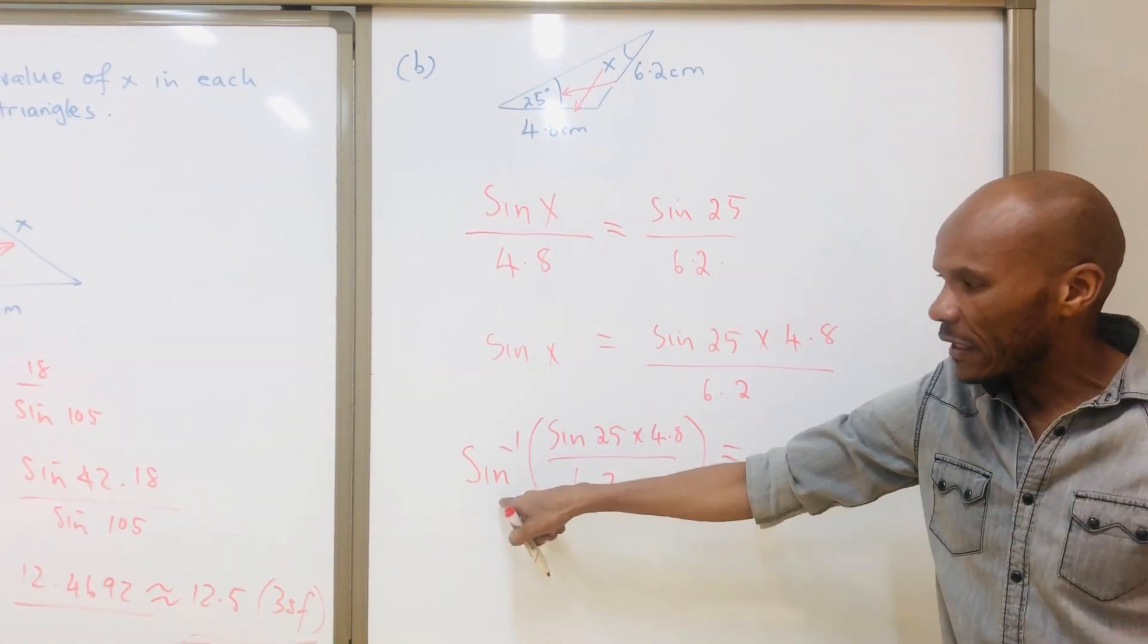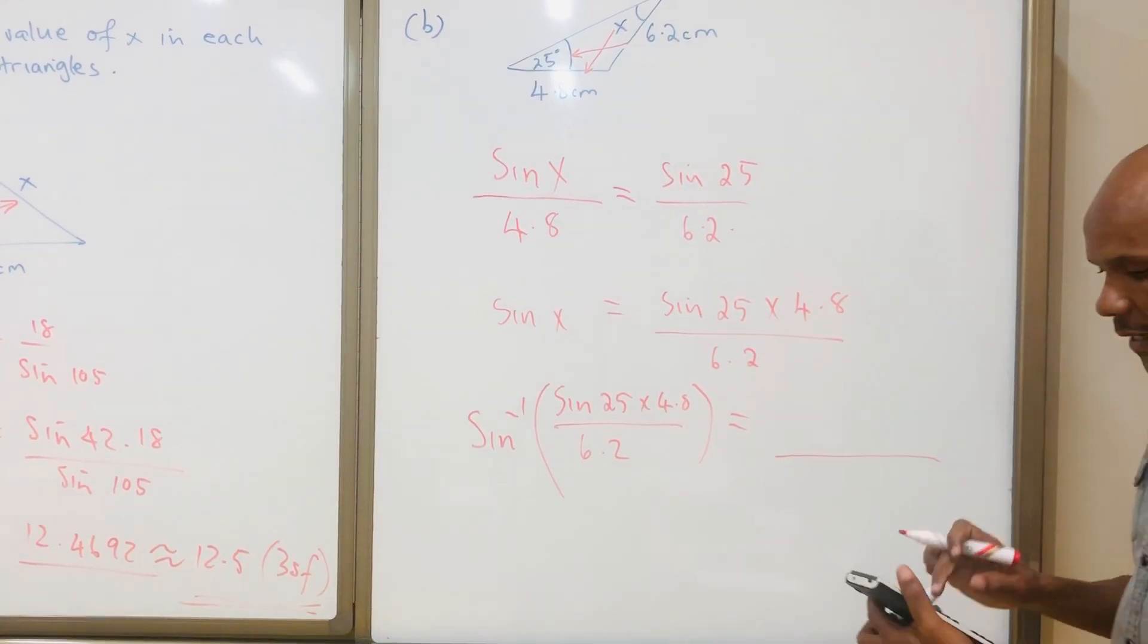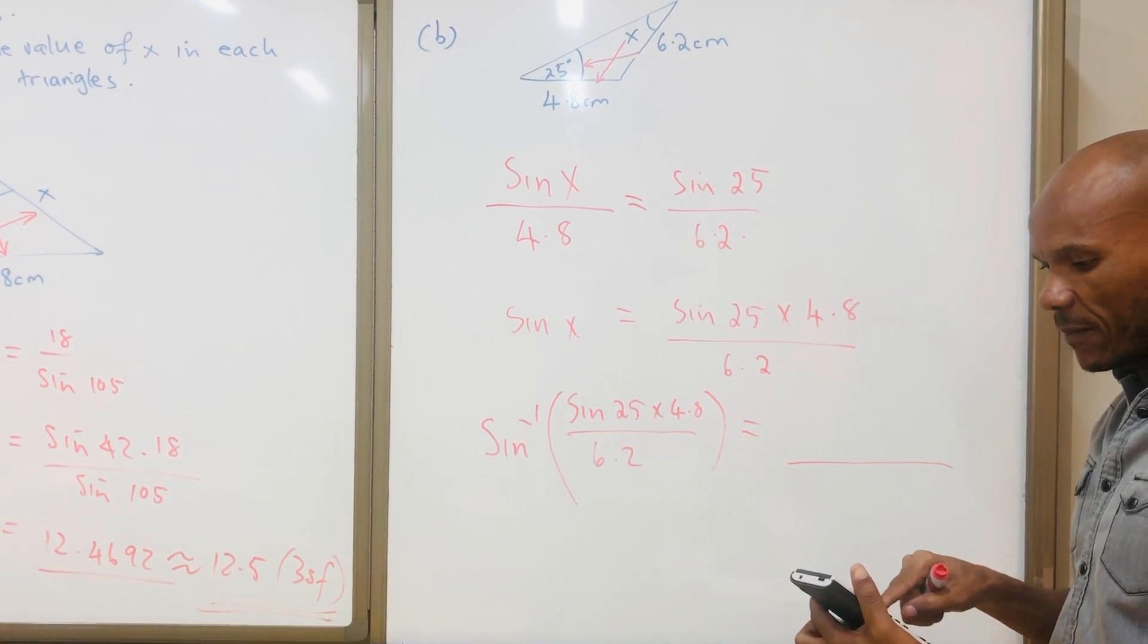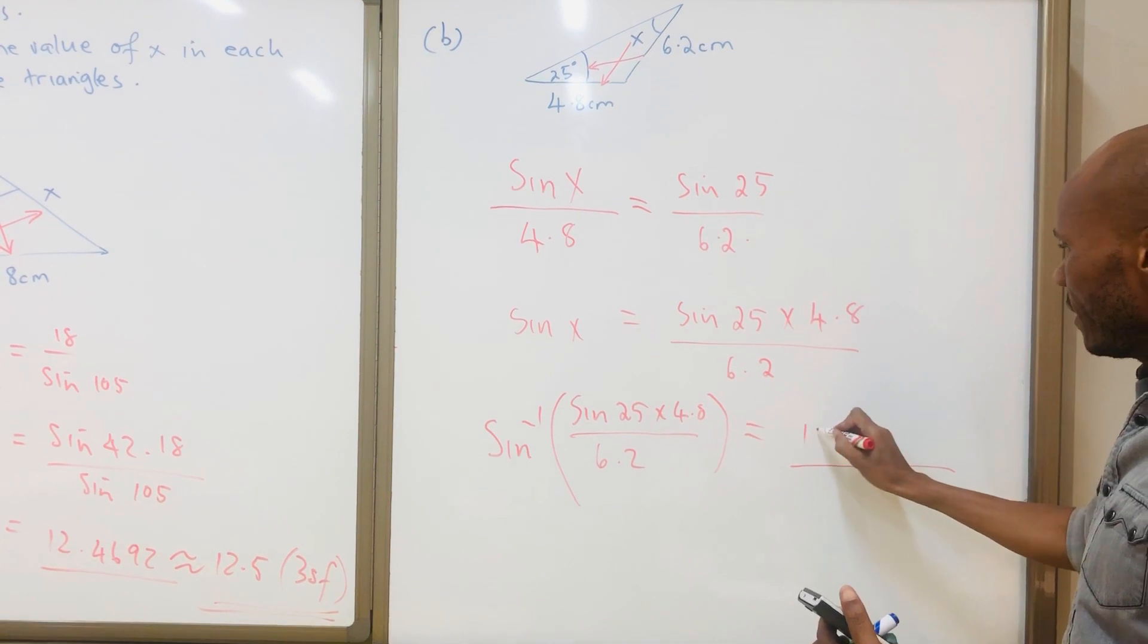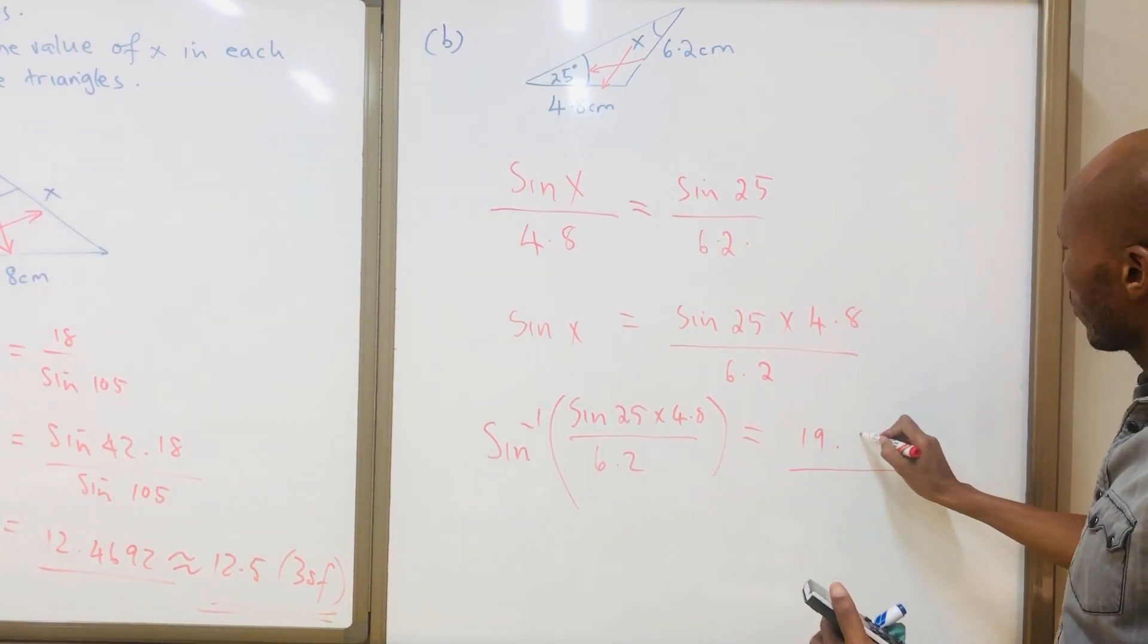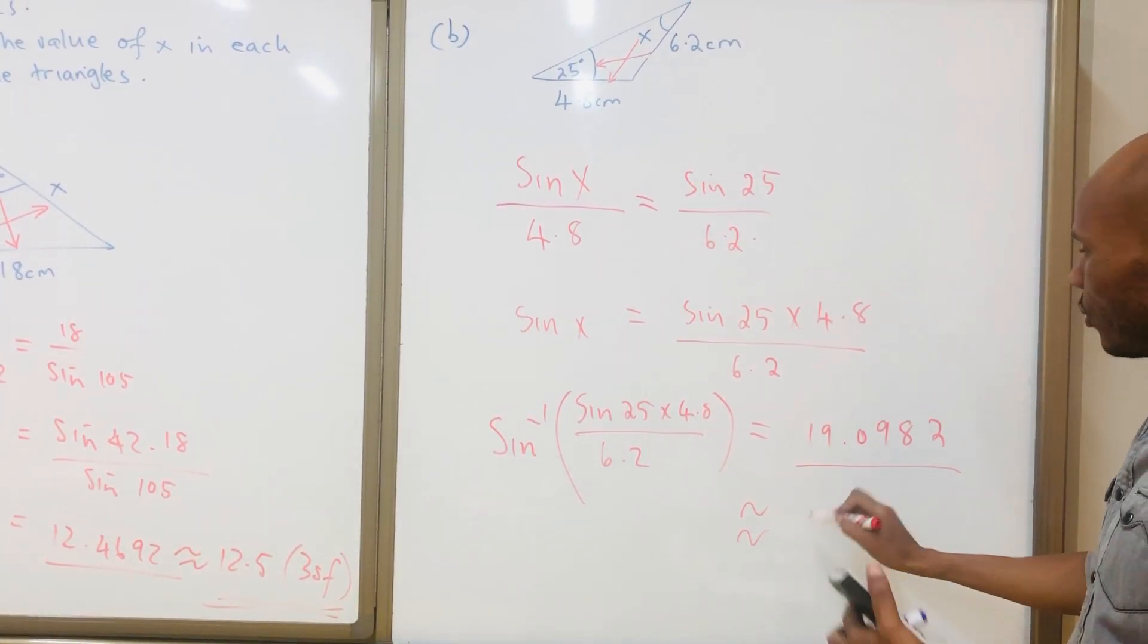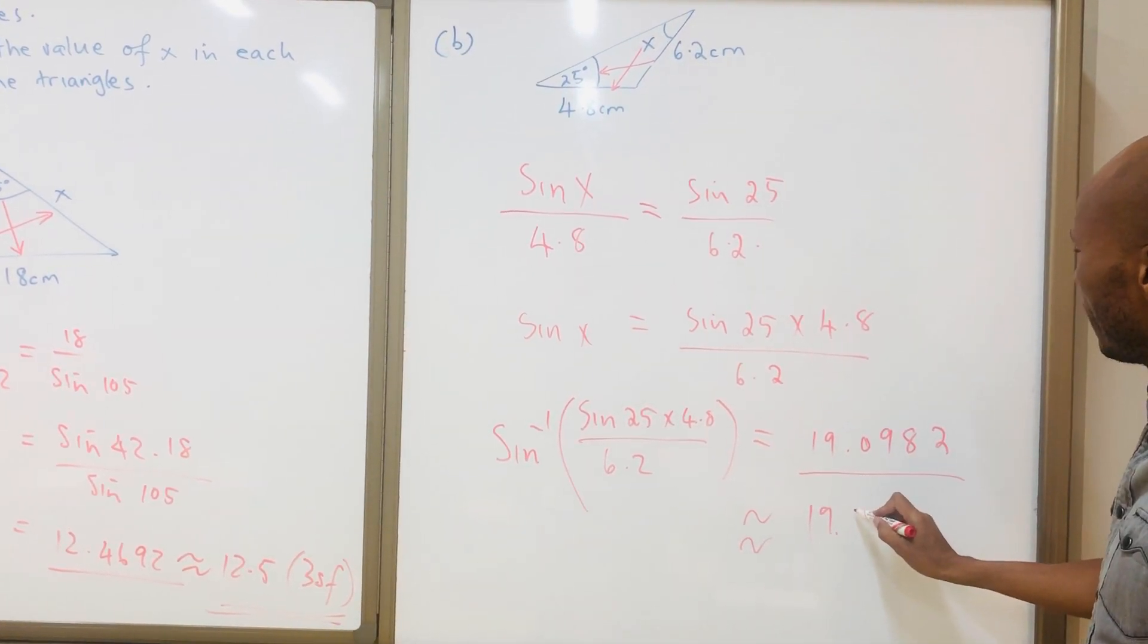Do not forget if you want to find the angle, you are using second function sine—that's going to give you an angle. When you calculate it, you are going to get 19.0982, which is going to be 19.1.